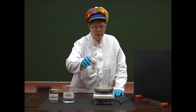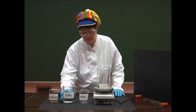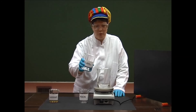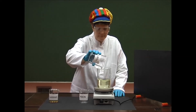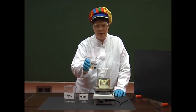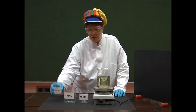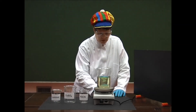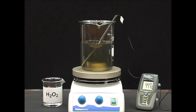Potassium thiocyanate solution is poured into the beaker, then an alkaline luminol solution is added as well. The solution is heated to a temperature of approximately 45 degrees centigrade, and as soon as the desired temperature is reached, a 30% hydrogen peroxide solution is added.